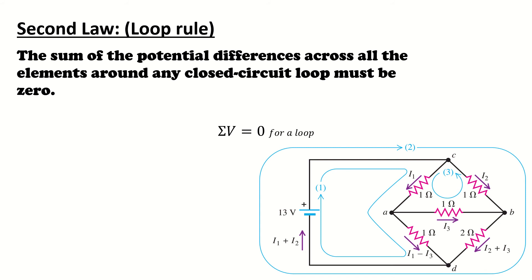The loop rule is equivalent to the principle of conservation of energy. Any charge that moves around any closed loop in a circuit, starting and ending at the same point, must gain as much energy as it loses. It gains energy as it is pumped through a source of EMF. Its energy may decrease in the form of a potential drop, negative IR, across a resistor or as a result of flowing backward through a source of EMF, from the positive to the negative terminal inside the battery.